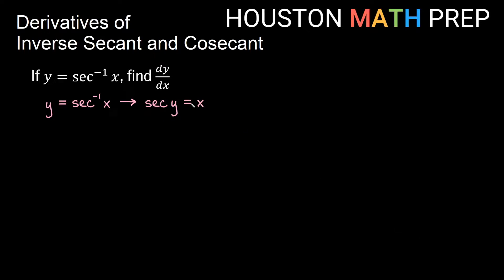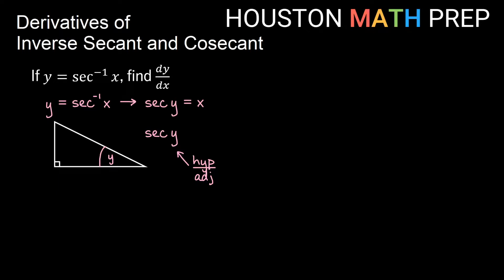This tells us about a right triangle with y as an angle in it. Remember that secant is the hypotenuse over the adjacent in a right triangle — it's the reciprocal of cosine, which is adjacent over hypotenuse. If we think of x as x over 1, then our hypotenuse is x, our adjacent is 1, and using the Pythagorean theorem, the missing side is the square root of x squared minus 1.